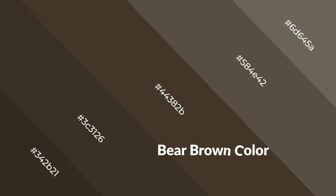Warm colors are symbols of warmth, fire, heat, and sunshine. They also evoke joy, passion, love, and even anger. You can see them used in restaurants and gyms.